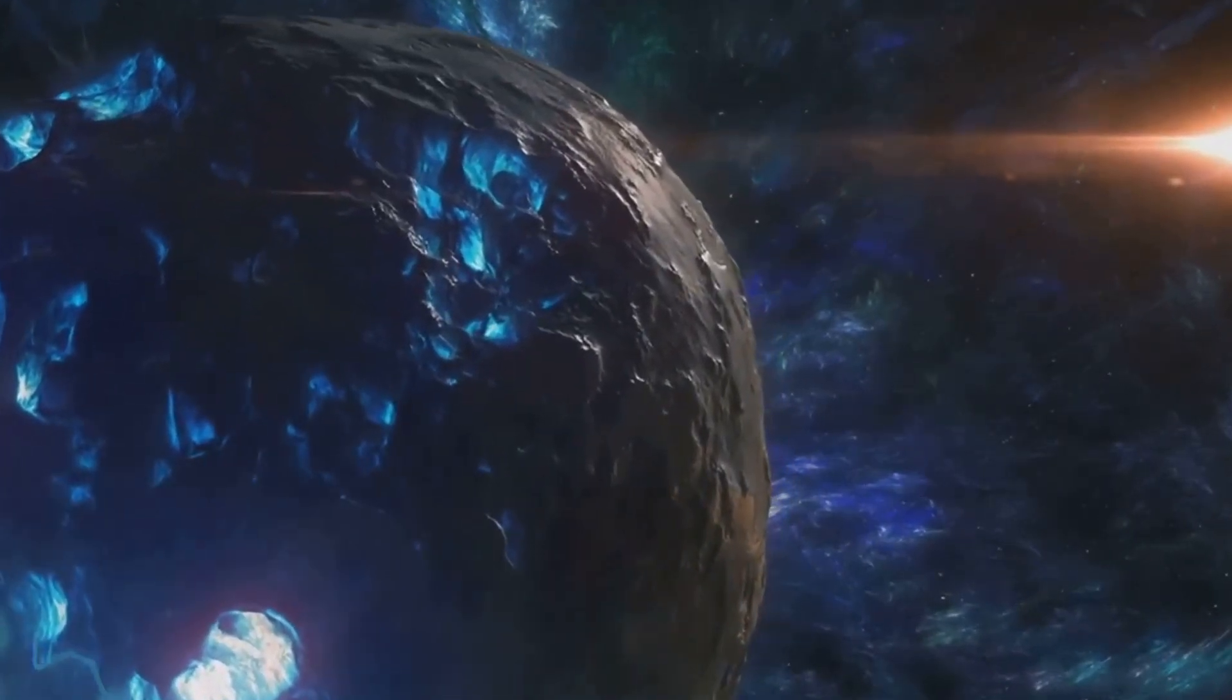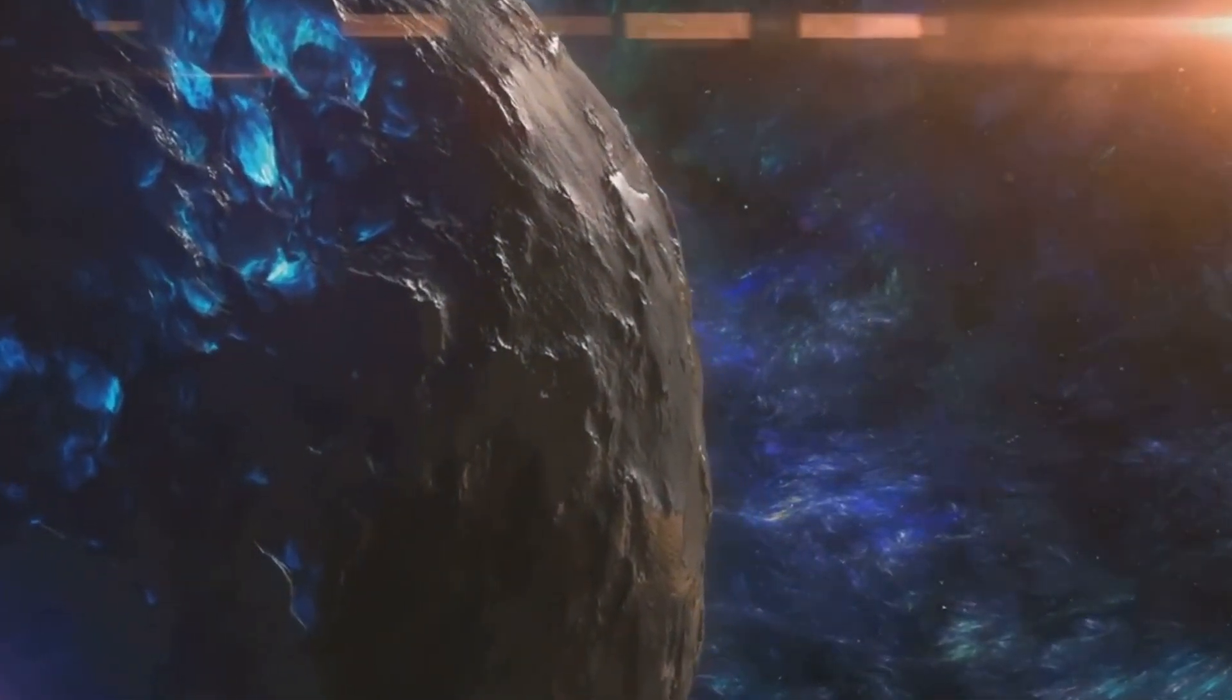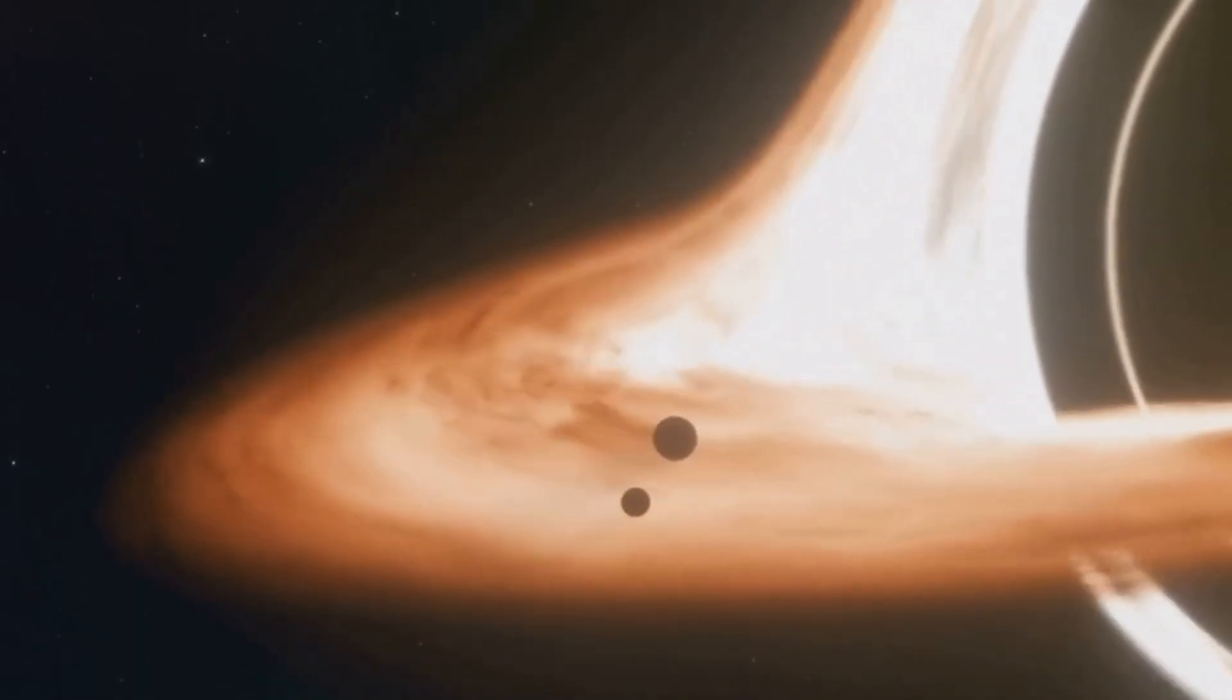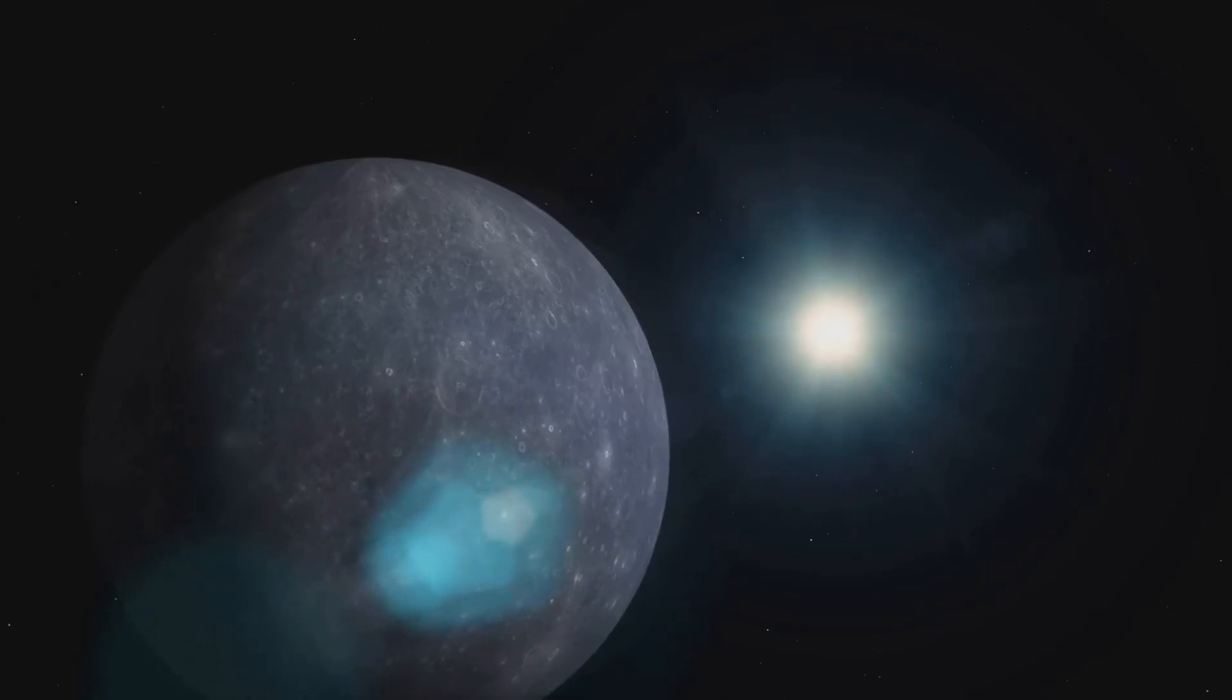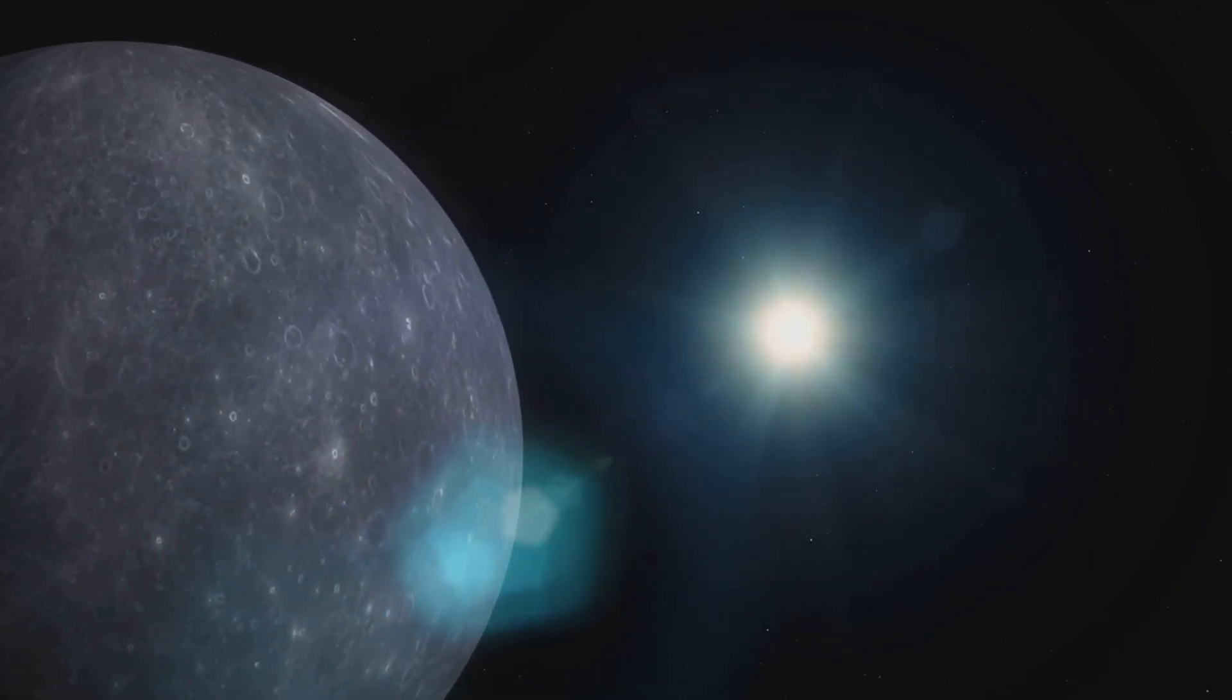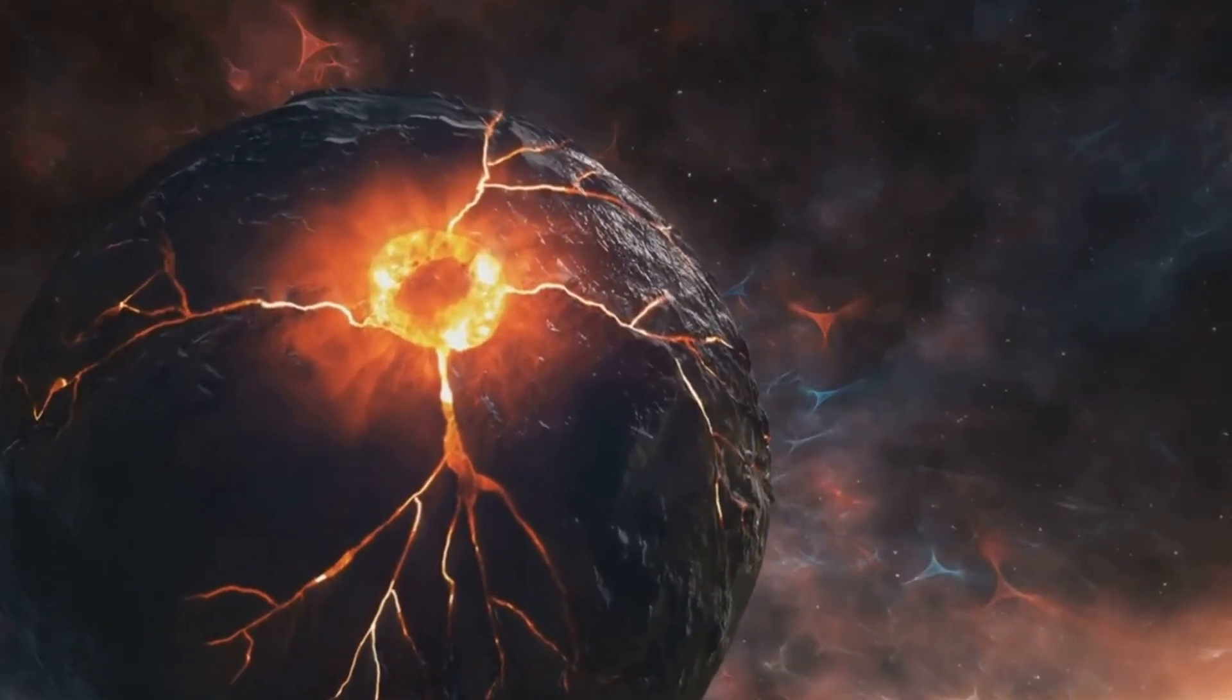But Webb's revelations didn't stop at exoplanets. It also managed to capture images of a dusty disk around the star AU Mike. Now, this might not seem like a big deal, but it's actually a significant insight into the process of planet formation. These dusty disks are often precursors to planets. They're composed of gas and dust left over from the star's formation, and over time, these particles can collide and stick together, forming larger and larger bodies until eventually a planet is born.